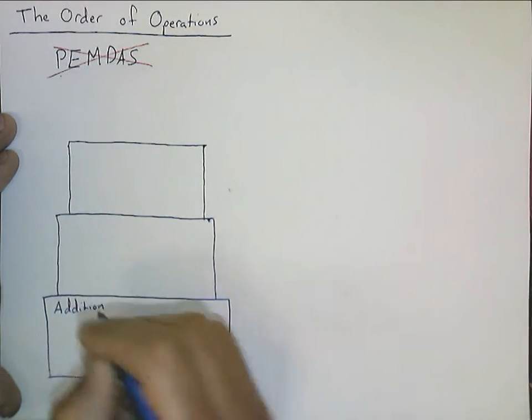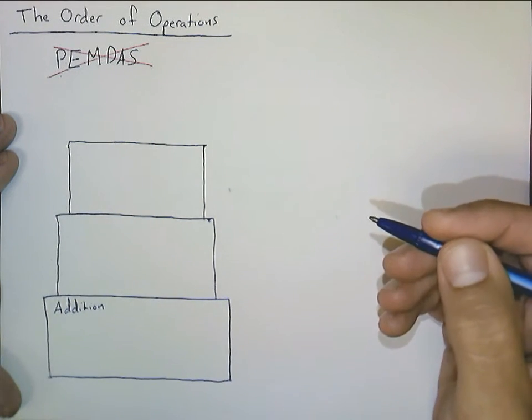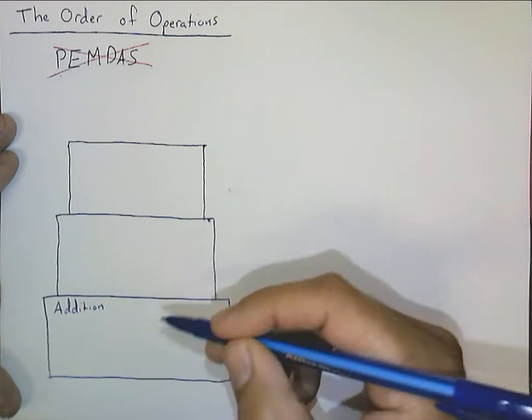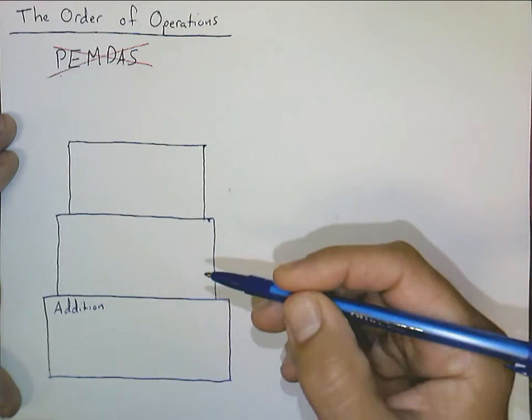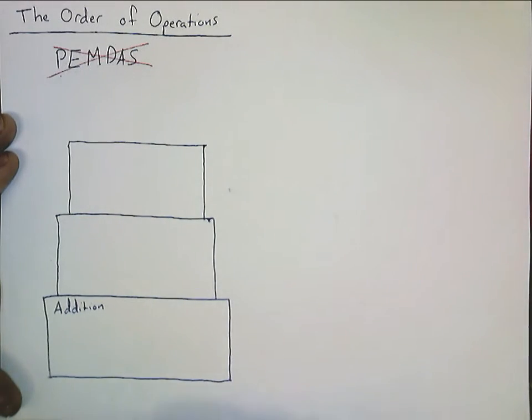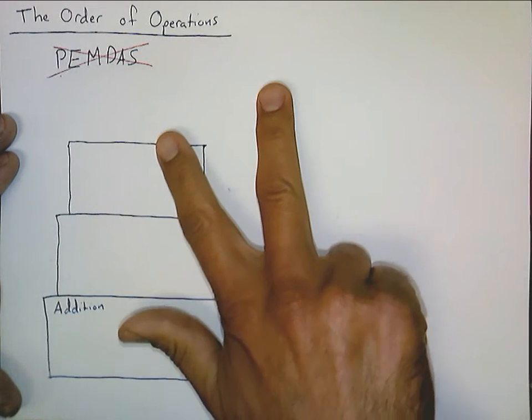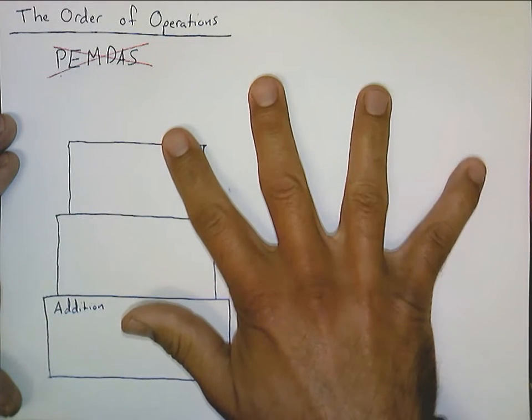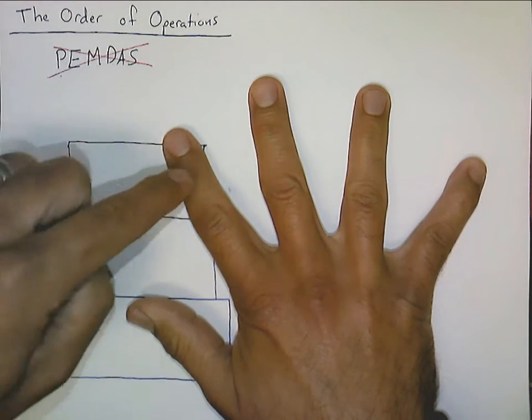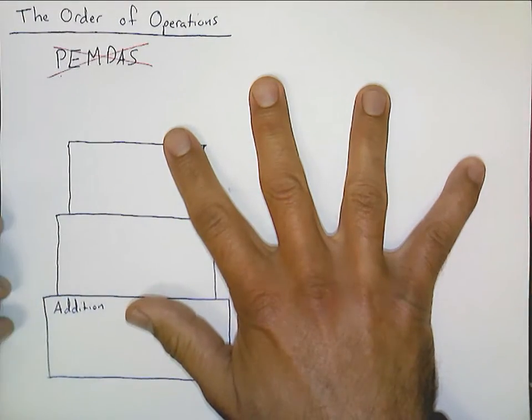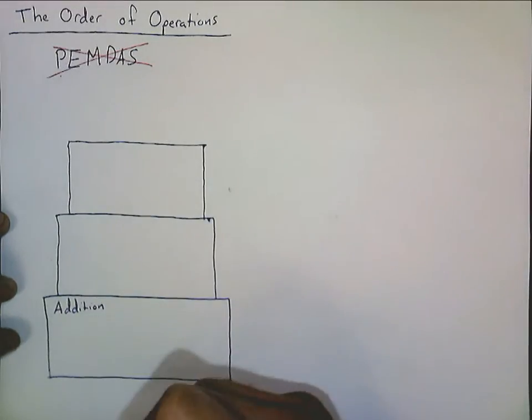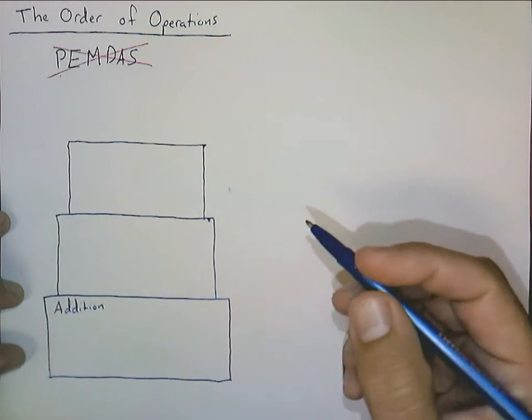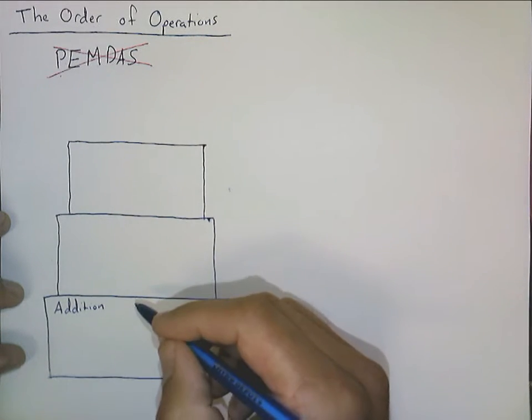The very first operation you learn to work with in your elementary school was addition. Because it's pretty simple. It's basically counting. You know, if you have three fingers and then you add on two more fingers, then you have one, two, three, four, five fingers. Wonderful. Not too difficult. Addition is kind of like counting.